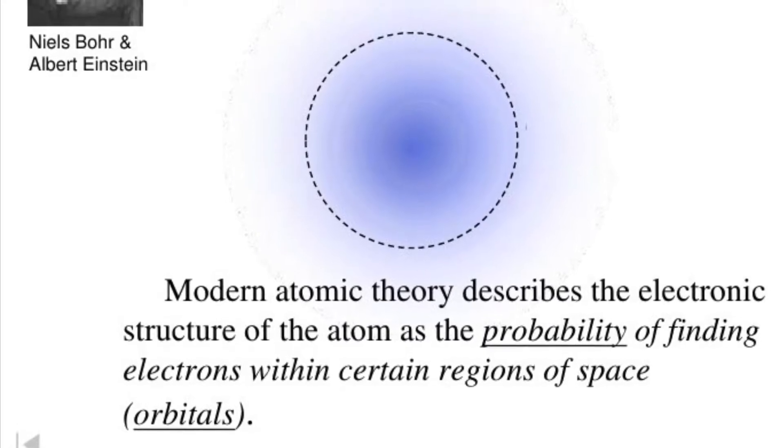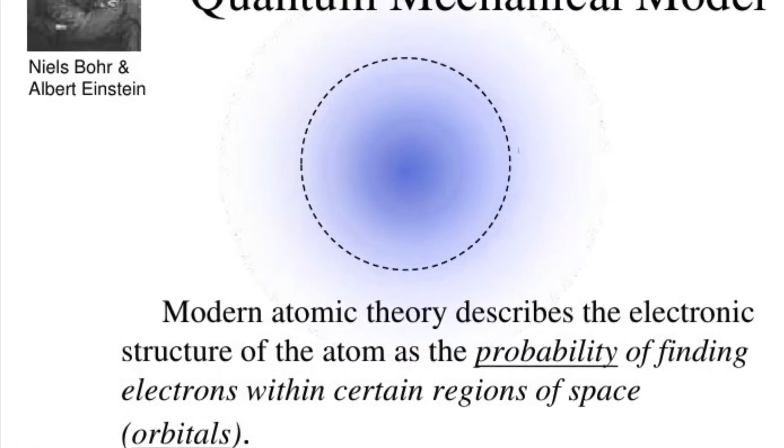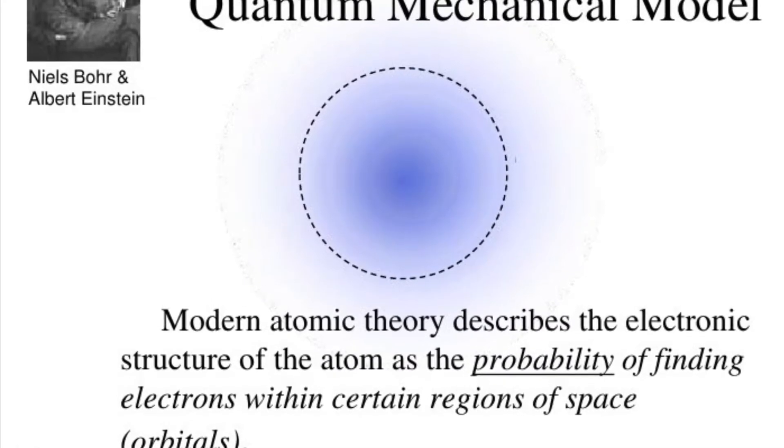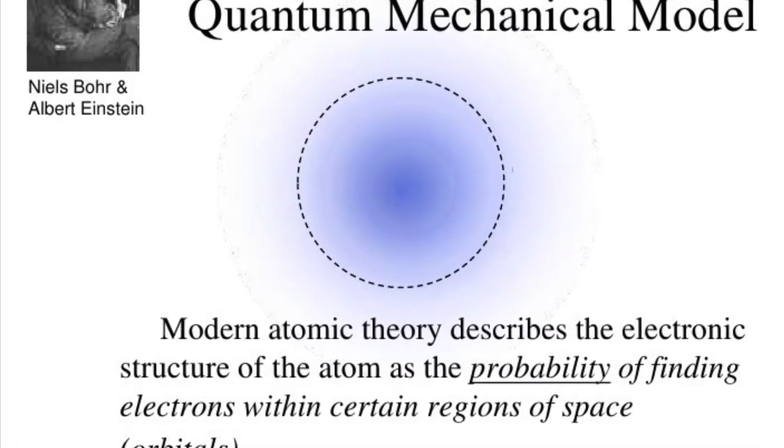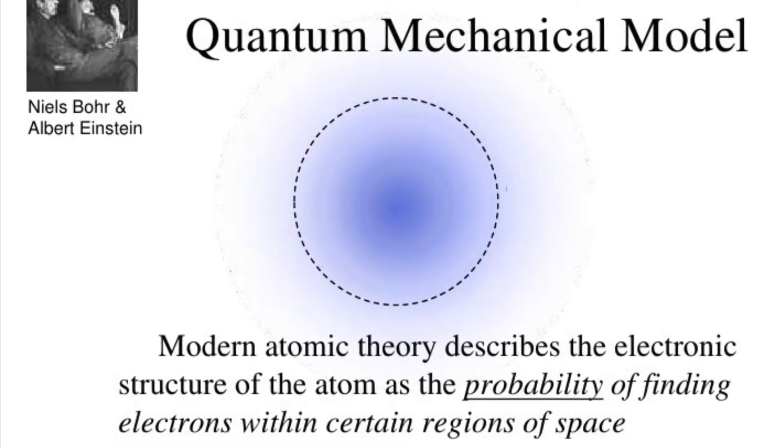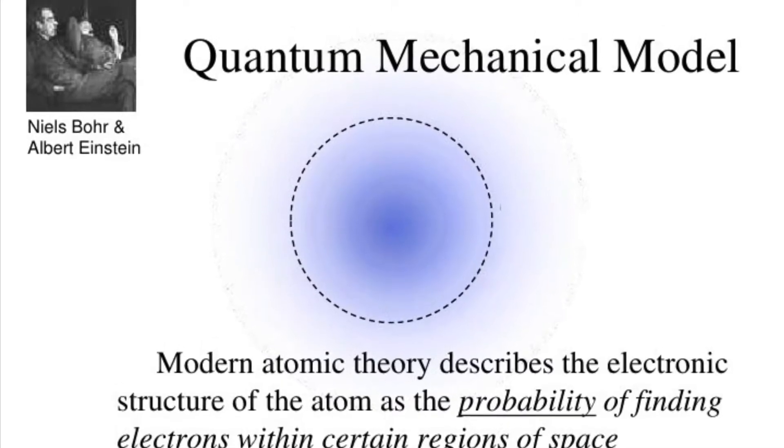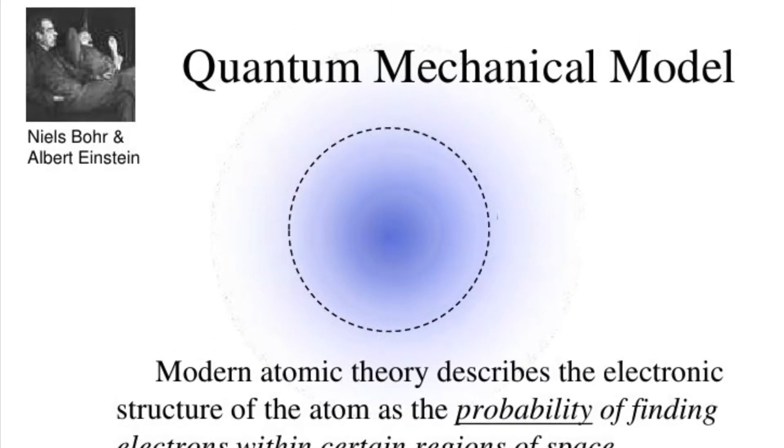Simply put, instead of describing electrons as particles located at a single point, like in most historical models of the atom, the quantum mechanical model of the atom describes electrons as particles forming a cloud of negative charge around the nucleus. The quantum mechanical model of the atom is also known as the wave mechanical model and is the modern atomic model in use today.